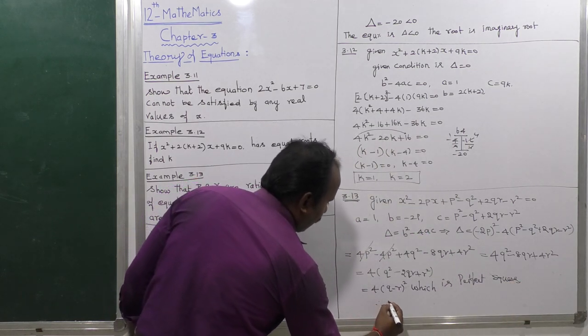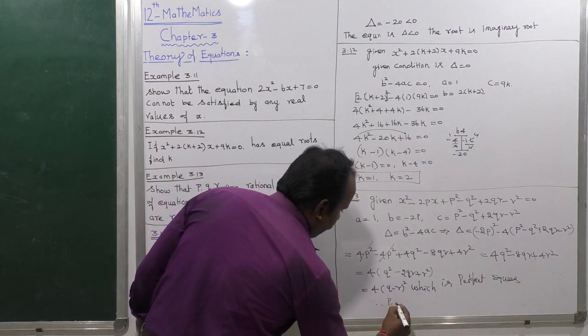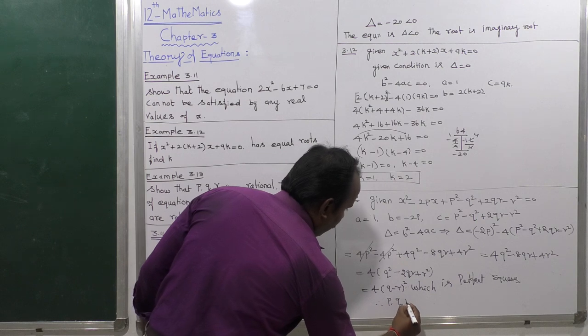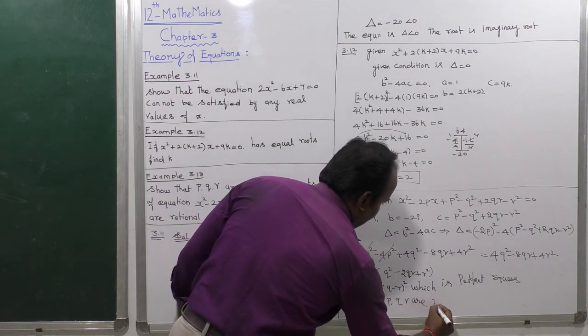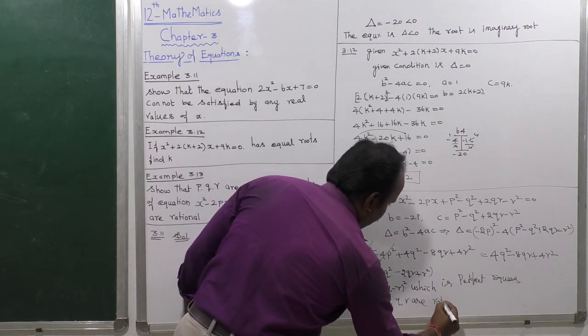Therefore, p, q, r are rational numbers, and hence the roots of the given equation are rational. This completes the proof.